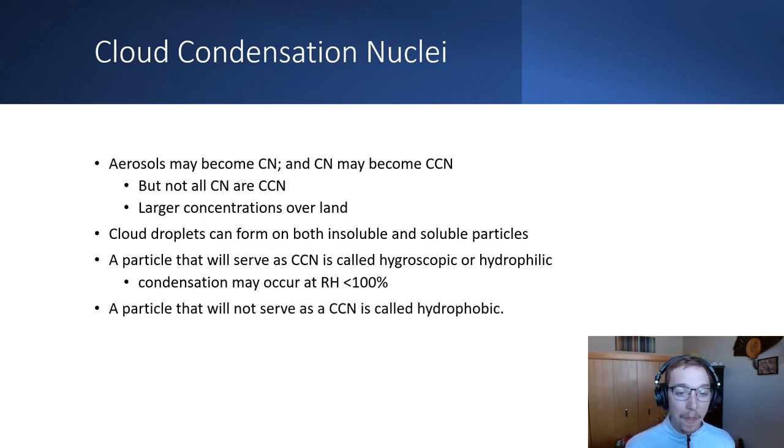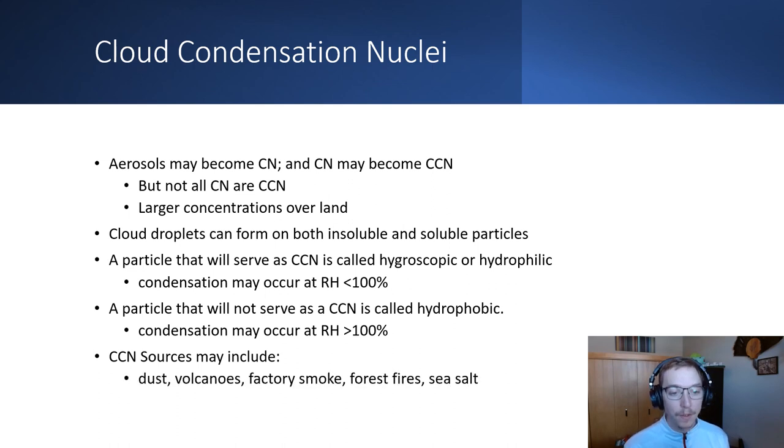A particle that will not serve as a cloud condensation nuclei, but could technically serve as a condensation nuclei, would be something like a hydrophobic nuclei or aerosol. Here, condensation may occur at RH greater than a hundred percent. Cloud condensation nuclei sources may include things like dust, volcanoes, factory smoke, forest fires, and sea salt, for good examples.